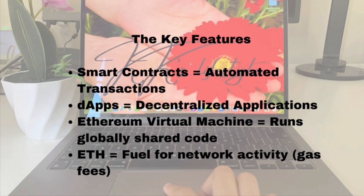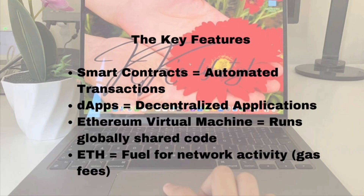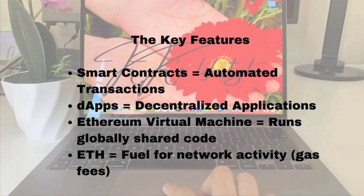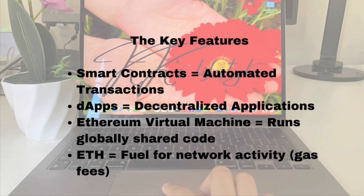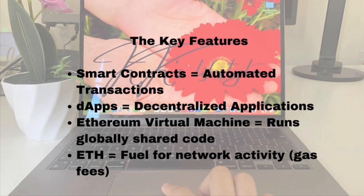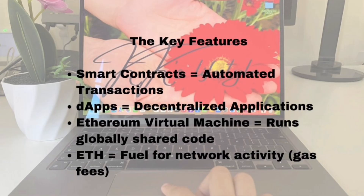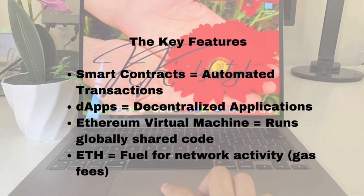Examples of these apps include decentralized exchanges like Uniswap and lending platforms. All of this is made possible by the Ethereum Virtual Machine, or EVM. You can think of the EVM as a global computer — it allows developers to run code across thousands of computers around the world at the same time, making the Ethereum network incredibly powerful, flexible, and decentralized. The entire ecosystem runs on Ether, ETH, Ethereum's native currency. ETH is used to pay for anything you do on the network, from sending tokens to executing smart contracts to interacting with dApps. These small payments are known as gas fees, and they help keep the network running smoothly by compensating validators for processing transactions.